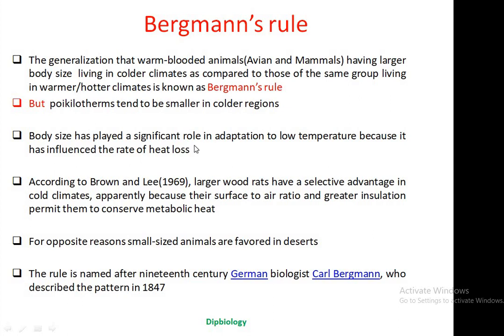The surface area to volume ratio in the case of large body size animals is low, and this gives an opportunity to stay in low temperatures by maintaining their metabolic activity. According to the study of Brown and Green in 1969, in large wood rats, we can see that a selective advantage is received by these wood rats in cold climates because their surface to volume ratio is low and with greater insulation capacity, permitting them to conserve metabolic heat in cold climatic conditions.